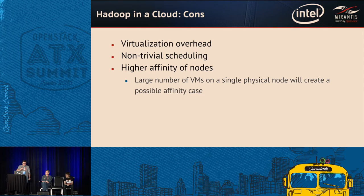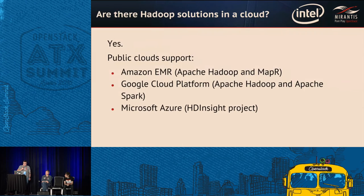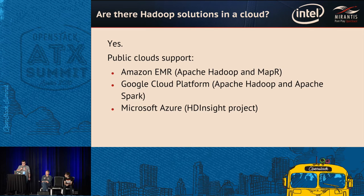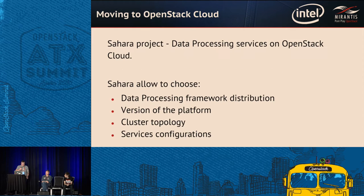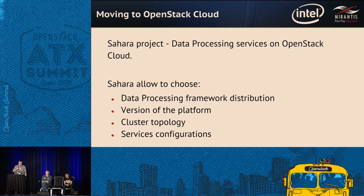There are already existing solutions for running Hadoop in the cloud. Most popular public clouds have something related to big data and Hadoop specifically — such as EMR, Google Cloud Platform for Apache and Spark workloads, and Azure. For private clouds, specifically OpenStack, we can use the Sahara project. It's an official OpenStack integrated project that enables data processing services and data processing framework provisioning. Using Sahara, you can provision frameworks on top of OpenStack, enable the data processing API, choose different distributions of Hadoop, and specify cluster topology through cluster and node group templates.